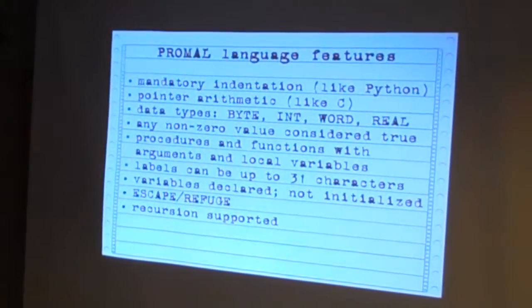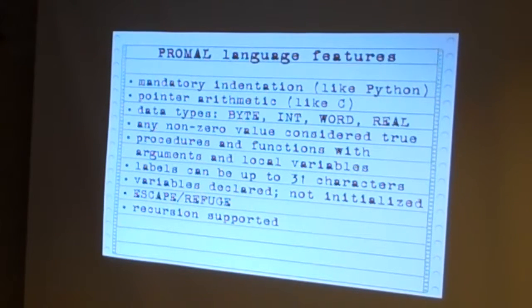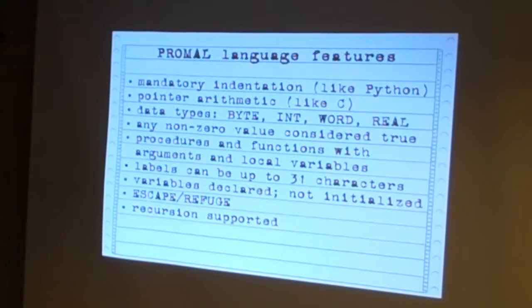Simple data types: just byte, int, word, and real — and by the way, int and word are the same length, but int is signed and word is unsigned. There is no pointer type. When you assign a pointer in PROMAL, you make it a word variable, and then when you dereference, you tell PROMAL what type of data you're pulling from it — you say dereference me a byte, dereference me an int, or whatever. True and false are reserved words.